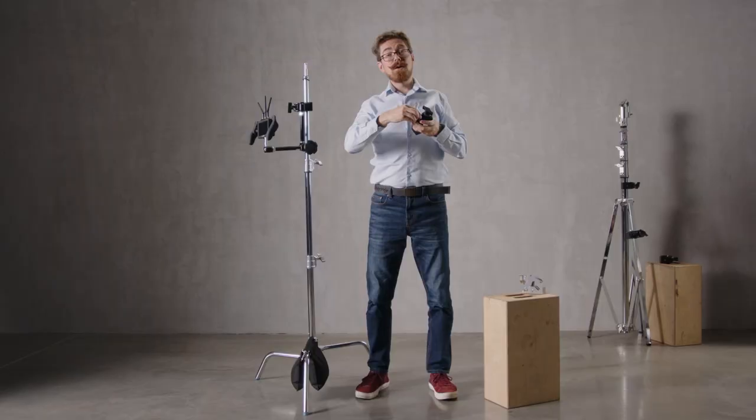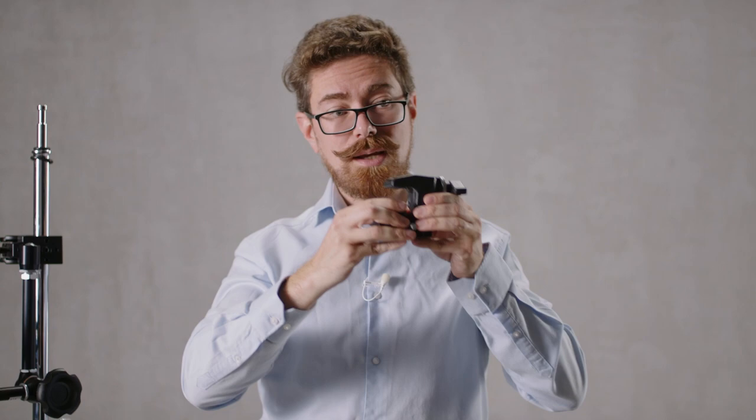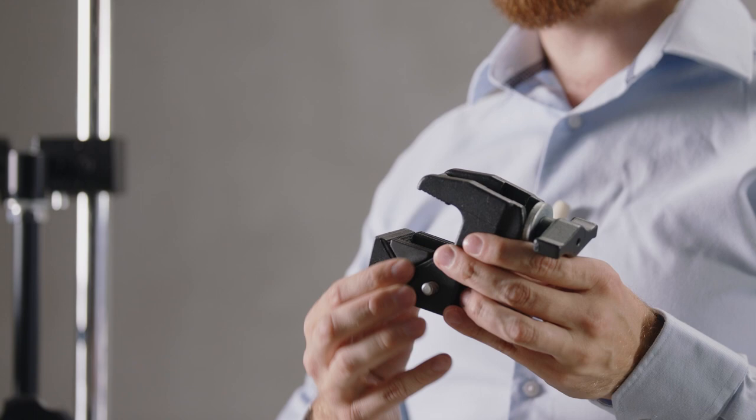We also have the option of taking this little attachment, placing it inside the clamp, positioning it in. It's got a couple of locator pins, so it will index itself into the right position, and then you have a flat surface that you can clamp with.